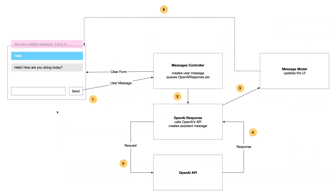What we're looking at here is the AI chat application, which is this part here, and it's basically just one screen with an input and a send button and then a list of messages. But behind the scenes is this part right here.